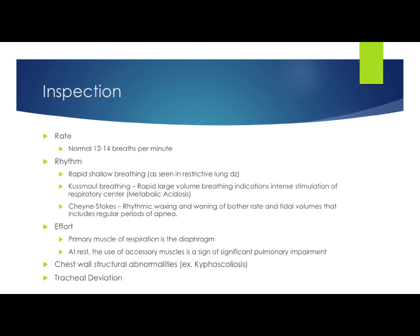Use of accessory muscles is a sign of significant pulmonary impairment — you can see the muscles getting sucked in between the ribs or supraclavicularly when they take a deep breath. You're also looking for nasal flaring in kids or head bobbing. Look at chest wall structure — kyphoscoliosis or spinal abnormality can cause restriction within the lung cavity. Also look for tracheal deviation, which is movement of the trachea to one side and can indicate certain pathological conditions.